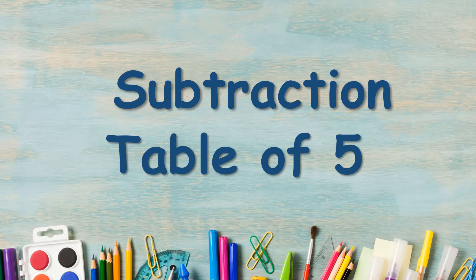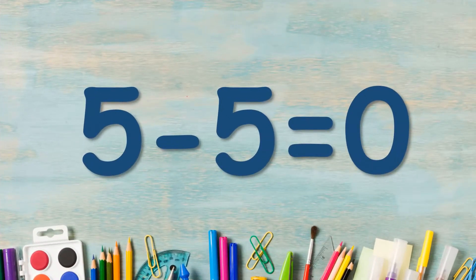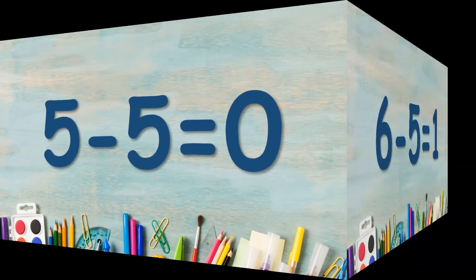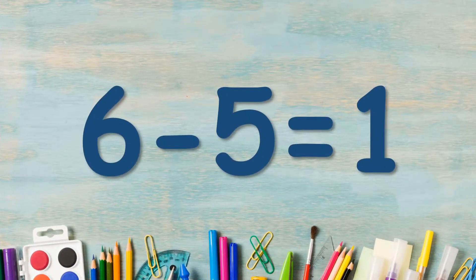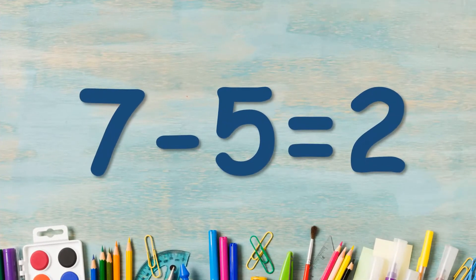Hello friends, welcome to our channel. Let us learn subtraction table of 5. So let us start. 5 minus 5 is equal to 0. 6 minus 5 is equal to 1. 7 minus 5 is equal to 2.